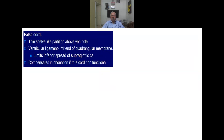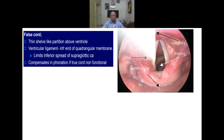The false cord forms a shelf-like partition above the ventricle. During laryngoscopy, you can identify the anterior commissure, the two true vocal folds — the white pearly structures — and the false vocal folds adjacent to them. The epiglottis, esophagus, and entrance to the trachea are also visible. This laryngoscopic view is commonly seen when performing intubation.